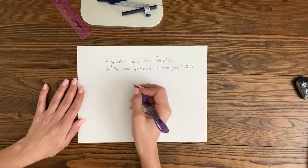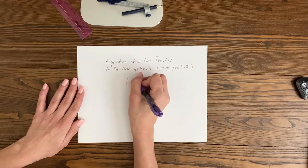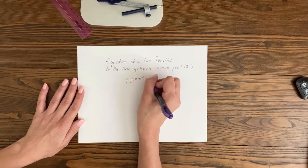The first thing that you want to start with is point-slope form: y minus y1 equals m times x minus x1.